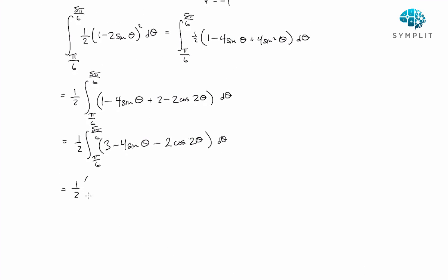All right, well now we can go ahead and integrate. It's pretty straightforward. We get a 3 theta and then plus 4 cosine theta, since the derivative of cosine is a negative sine. And then here minus, this is just going to end up being sine of 2 theta. And we're evaluating from pi over 6 to 5 pi over 6.